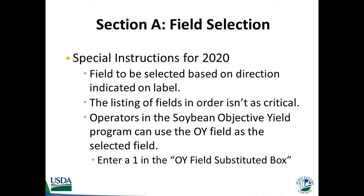For the 2020 crop year, special instructions were developed for random field selection that do not involve using a random number table. Because enumeration for the 2020 survey is being conducted by telephone, procedures for randomly selecting the field needed to be simplified. Instead of selecting a field based on a random number table, the field will be randomly assigned based on either one of eight possible directions — one of the four cardinal directions (north, south, east, or west) or one of the four intercardinal directions (northeast, southeast, northwest, or southwest) — indicated on the barcode label on either the front of the questionnaire or the kit envelope.